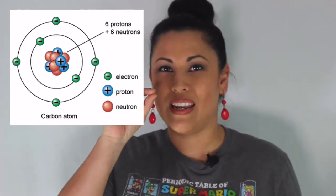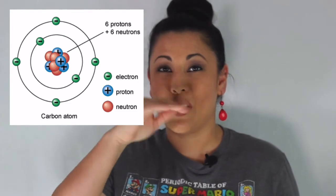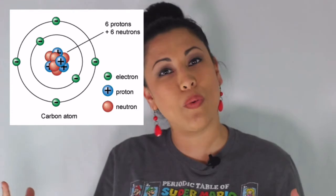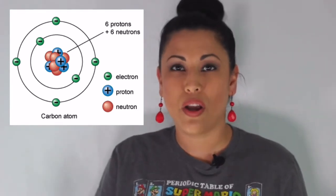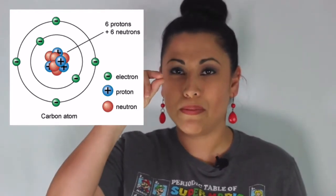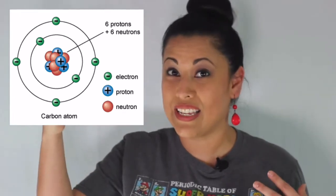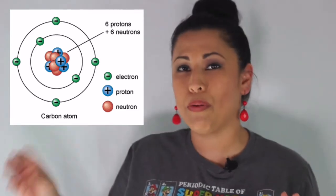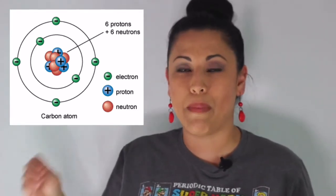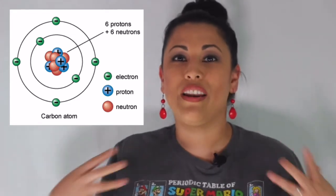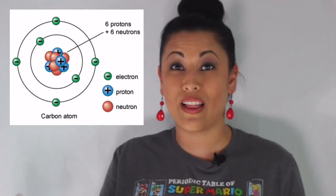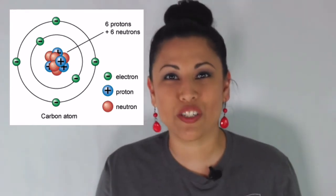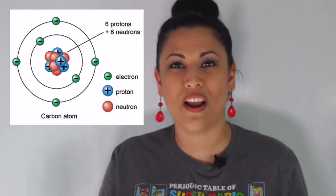Our last particle is very small and negative, located outside of the nucleus — in what we call the electron cloud. Electrons have almost no mass; they do exist and have a little bit of mass, but they don't add to the mass of the atom. Only the protons and neutrons add to the mass. So: electrons are negative in the electron cloud — go ahead and say it with me: electrons are negative in the electron cloud.